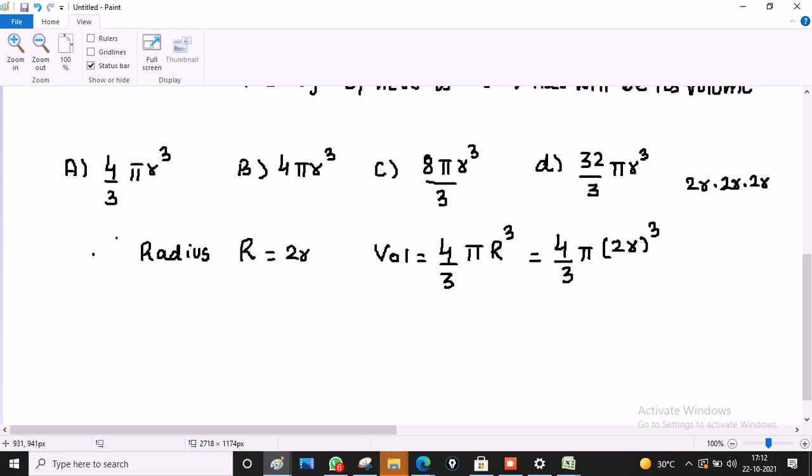So it gives us 2 into 2 into 2, which is 8R cube. So 4 by 3 pi into 8R cube. So D is the correct option.